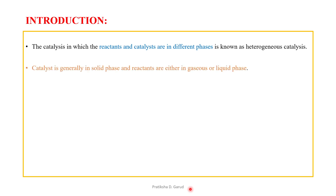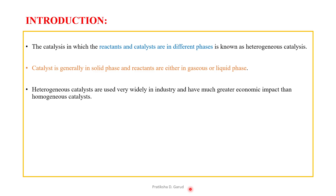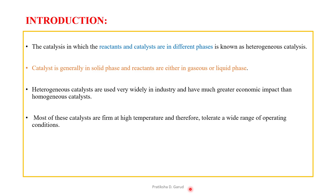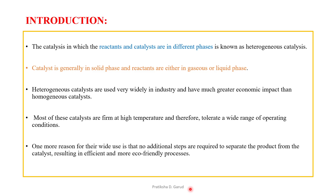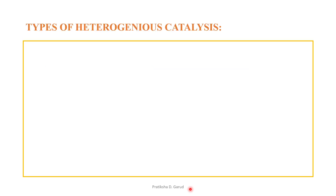The catalyst is generally in the solid phase and the reactants are either in the gaseous or liquid phase — meaning they are in different phases. Heterogeneous catalysts are widely used in industry and have much greater economic impact than homogeneous catalysts. Most are stable at high temperatures, tolerating a wide range of operating conditions. No additional steps are required to separate the product from the catalyst, resulting in efficient and eco-friendly processes.